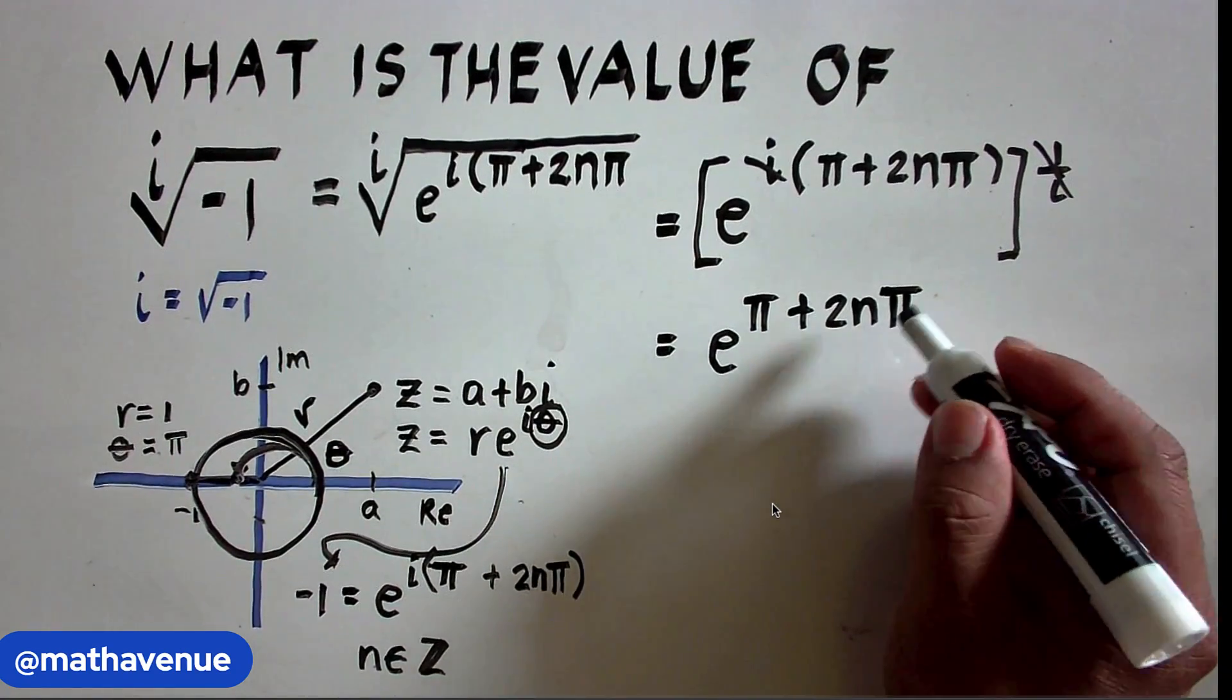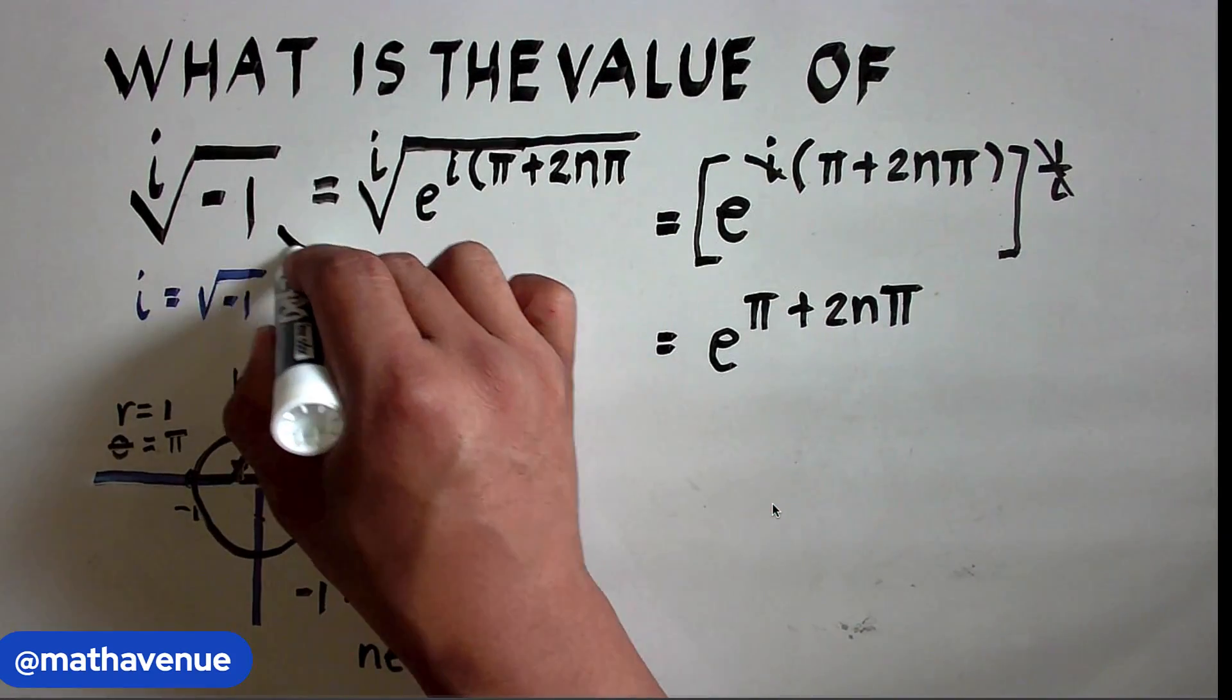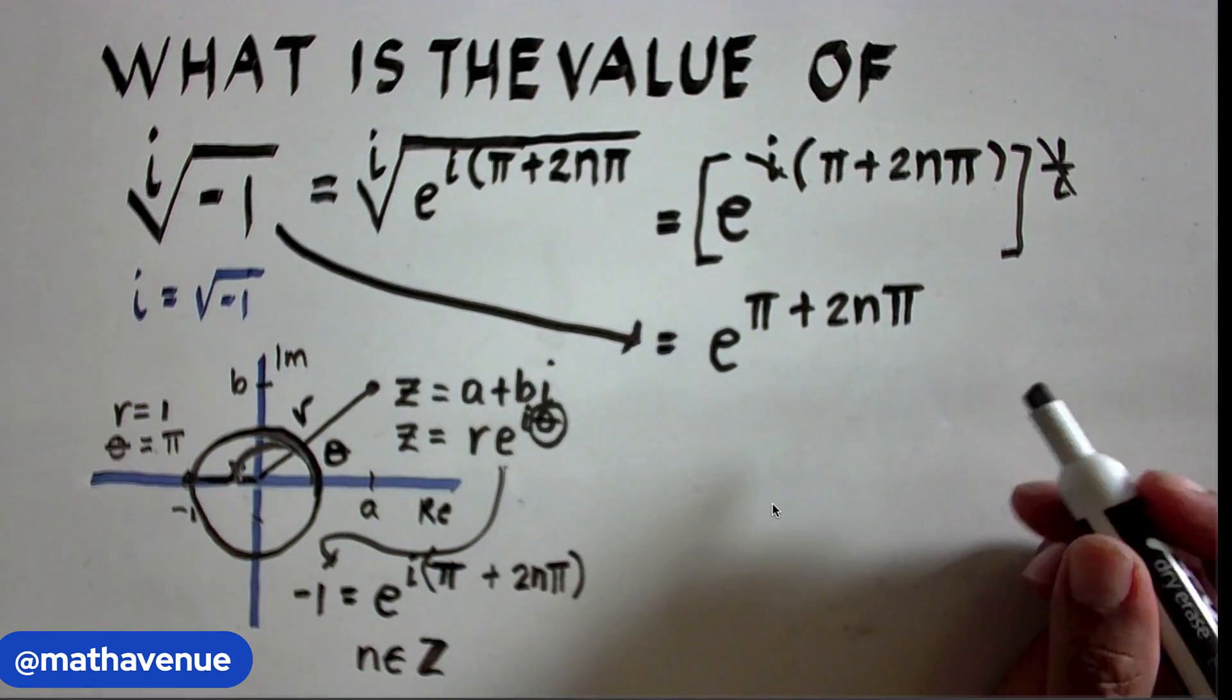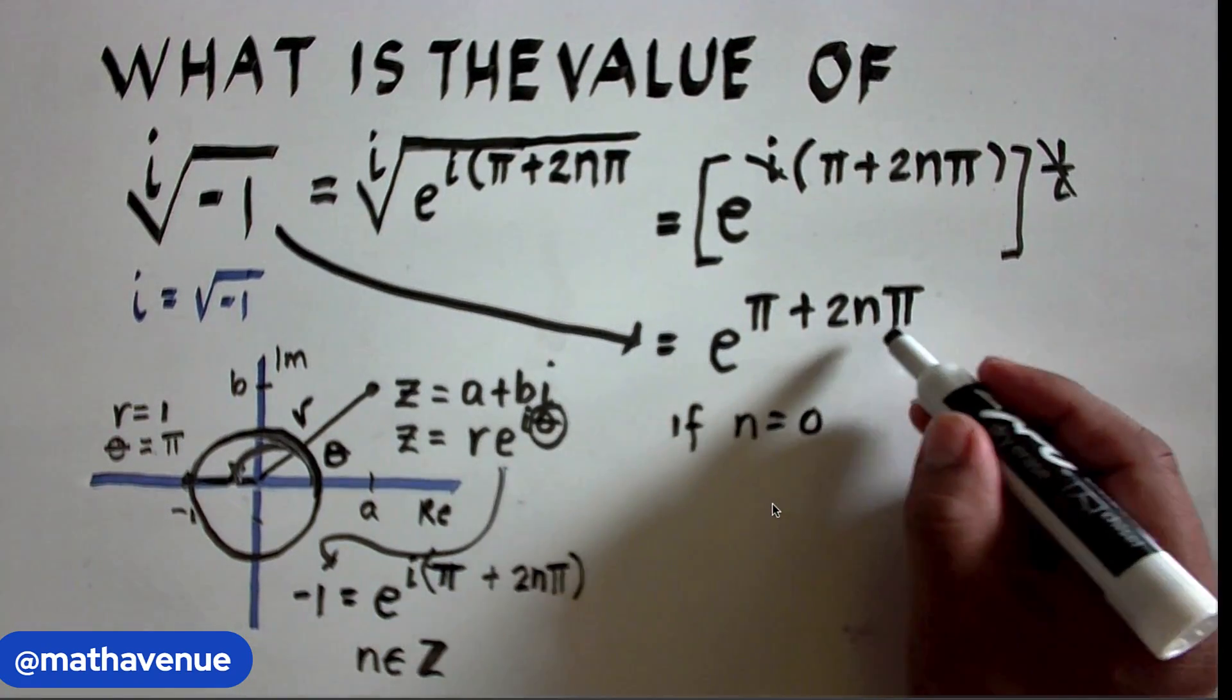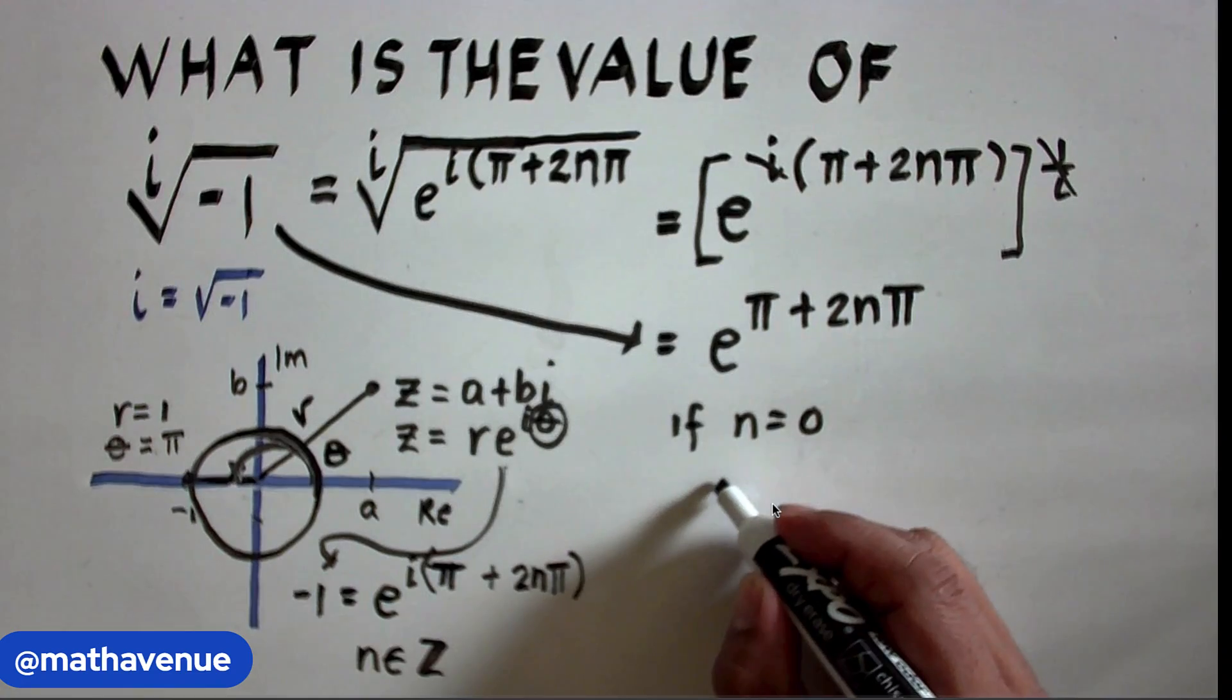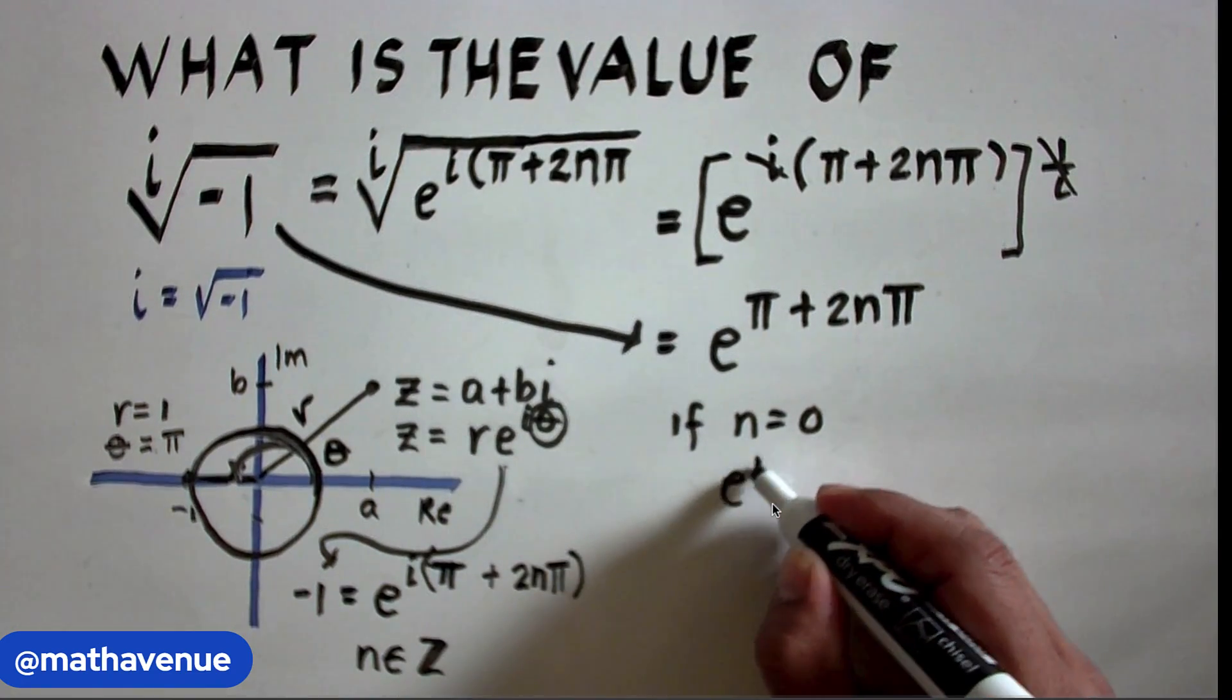So, you can take any values for n. That means, our given equation now is equal to that. So, if n equals 0, what is the value of this? This becomes 0. So, what we have is e^π.